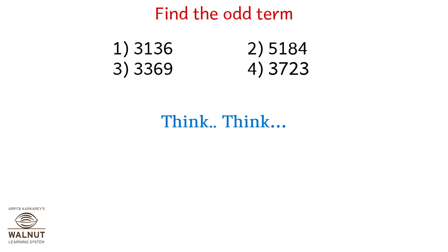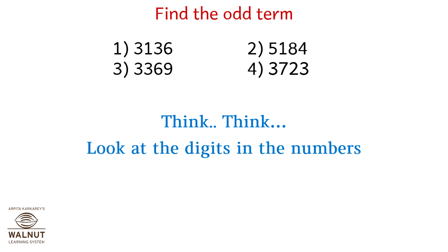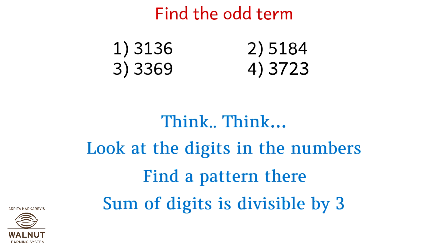Find the odd term. Look at the digits in the numbers — the sum of the digits is divisible by 3. So the odd one is option 1.